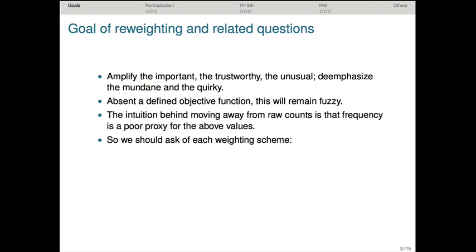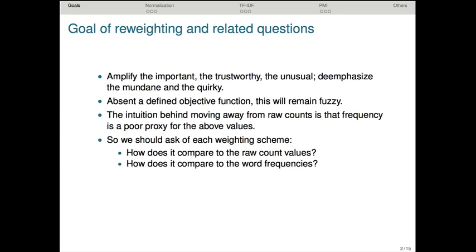We can set ourselves some general goals. I'm assuming the values we start with are pure distributional counts. Thus, we already have information about raw frequency of occurrence and co-occurrence, so we can assess reweighting methods by looking at how they compare to the raw count values, how they compare to the overall word frequencies, and what overall distribution of values does the reweighting scheme deliver.